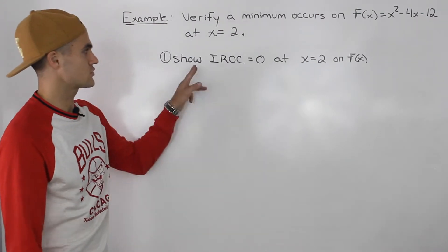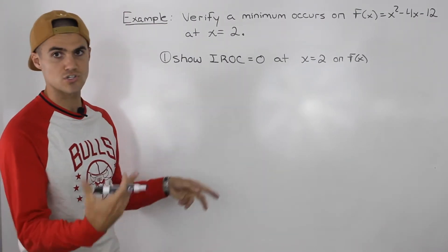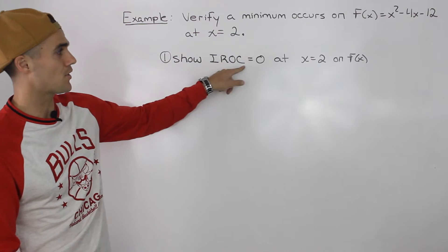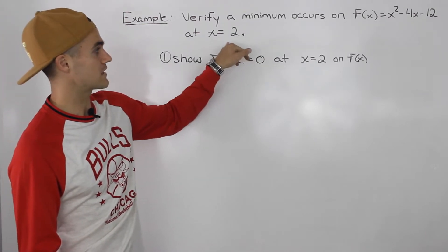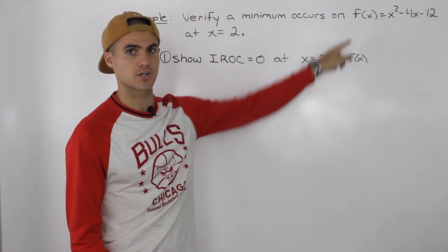The first step is to show that the instantaneous rate of change, or the slope of the tangent, is equal to 0 at that specific x value of 2 on this function f(x).